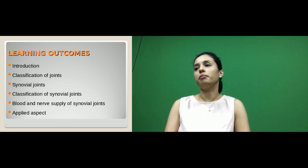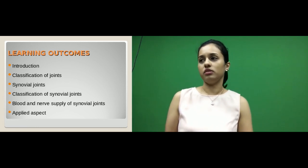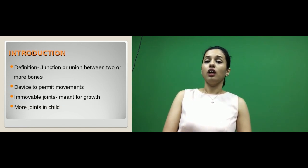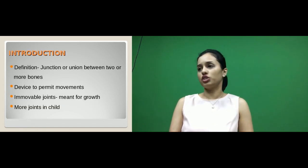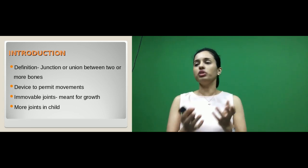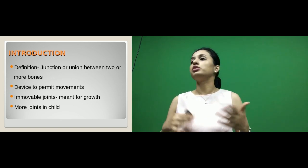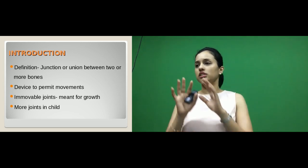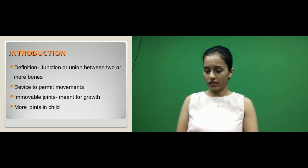You know that the human body is made up of the skeletal system, which includes both bone and cartilage. By definition, a joint is a junction, or an area, or a union between two or more bones. So wherever bones are articulating — sometimes two bones, sometimes more than two — that area is called a joint.